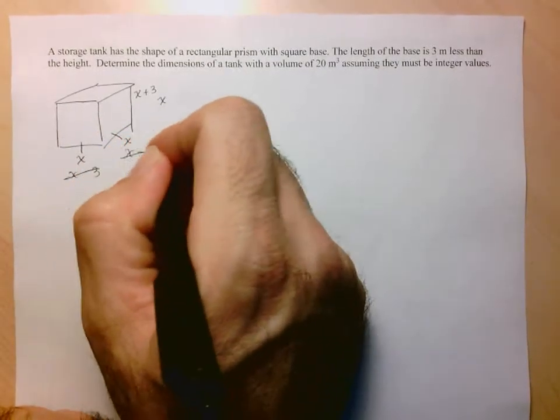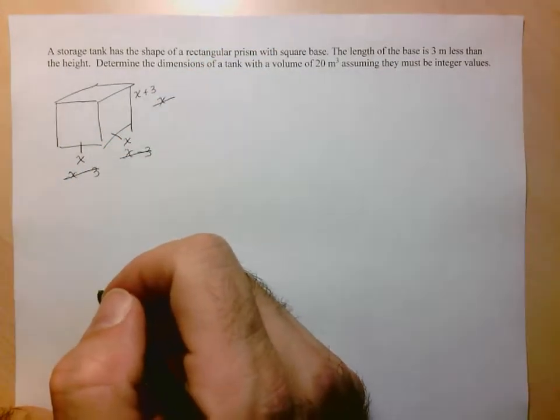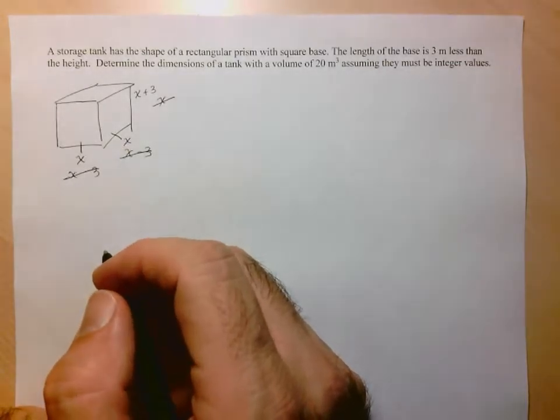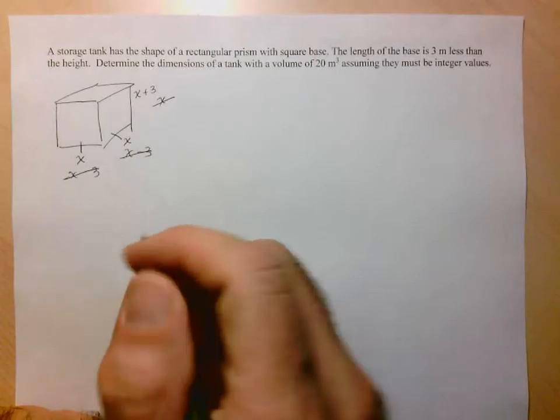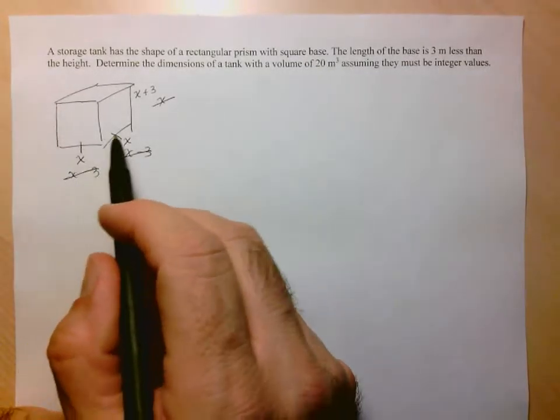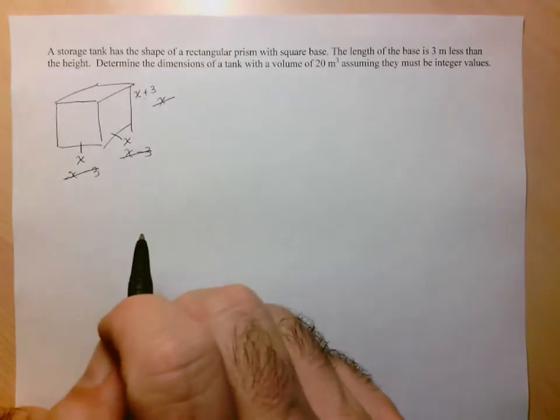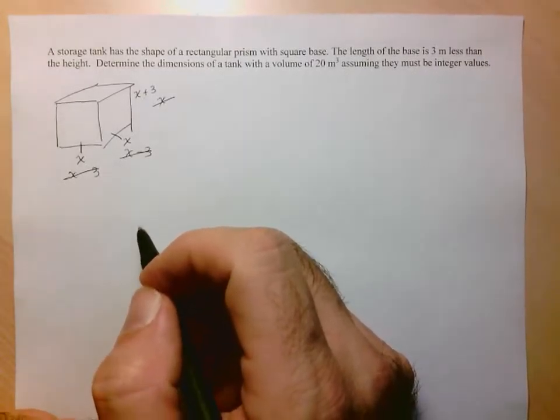And then that means that the height is going to be x plus 3. Not that this is going to make a big difference, but since I have to multiply all these three, I'd rather multiply x times x than x minus 3 times x minus 3. So this still satisfies the conditions because the base lengths are still 3 less than the height. Let's see what they tell us.